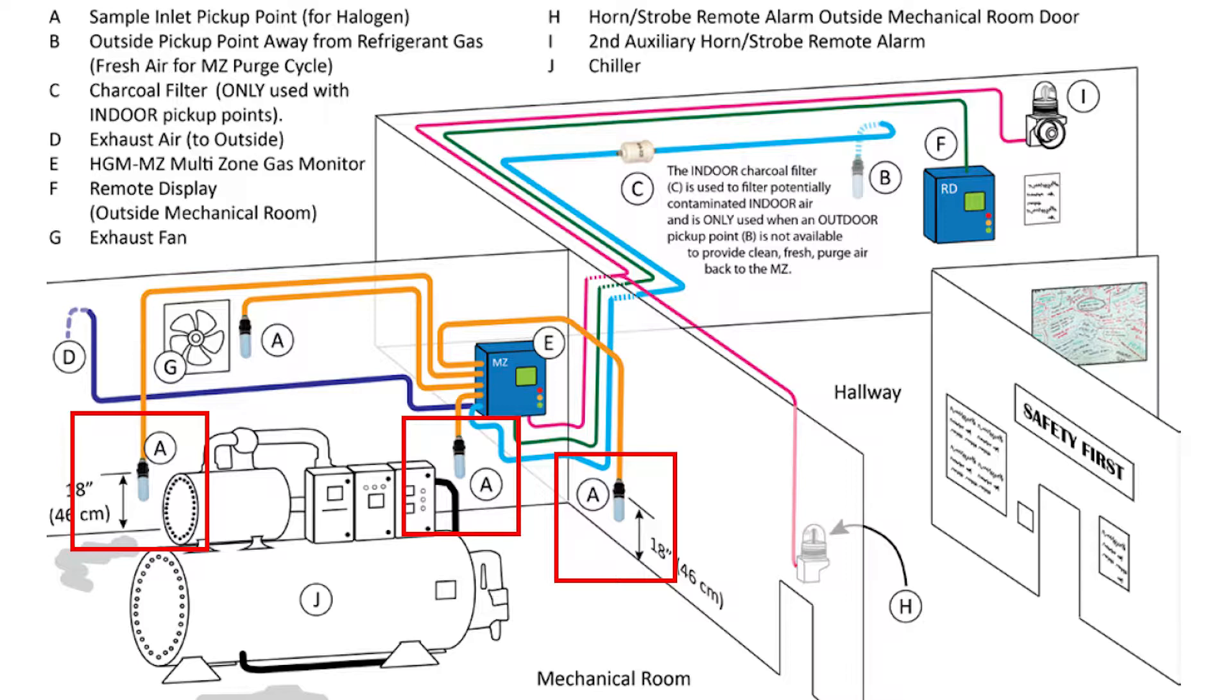End filters should be placed 6 to 12 inches off of the ground to detect refrigerant and other heavier, denser gases that settle low to the ground. To detect lighter gases, such as carbon dioxide, place end filters 4 to 6 feet off of the ground.